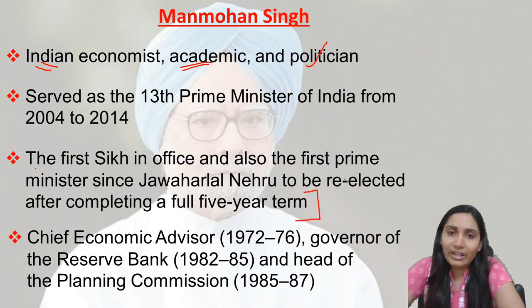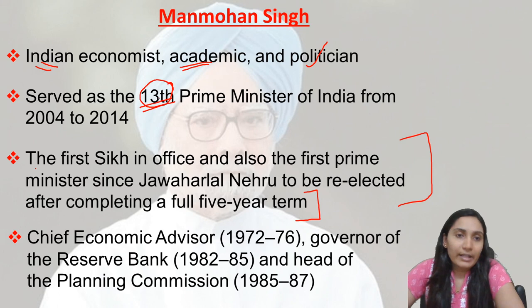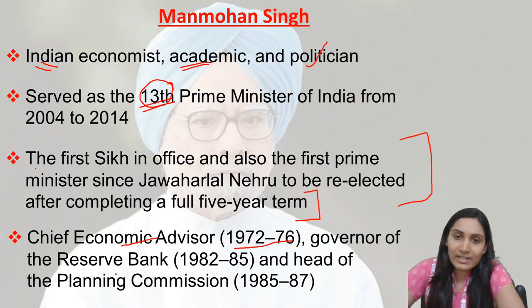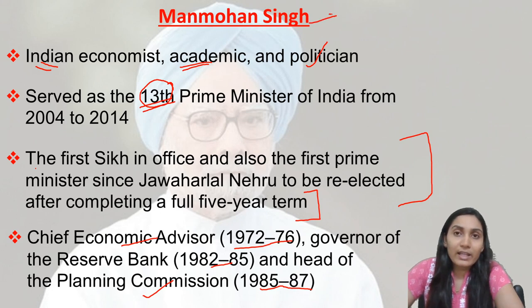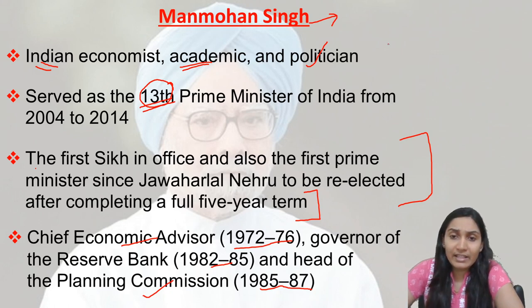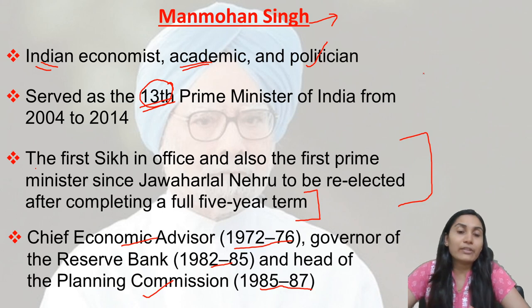After Jawaharlal Nehru, Manmohan Singh was the next prime minister to be re-elected after a full five-year term. He was the Chief Economic Advisor from 1972 to 1976, served as Governor of the Reserve Bank of India from 1982 to 1985, and was head of the Planning Commission from 1985 to 1987. So apart from being a politician, he is also an academician and economist who held key roles in the Government of India.